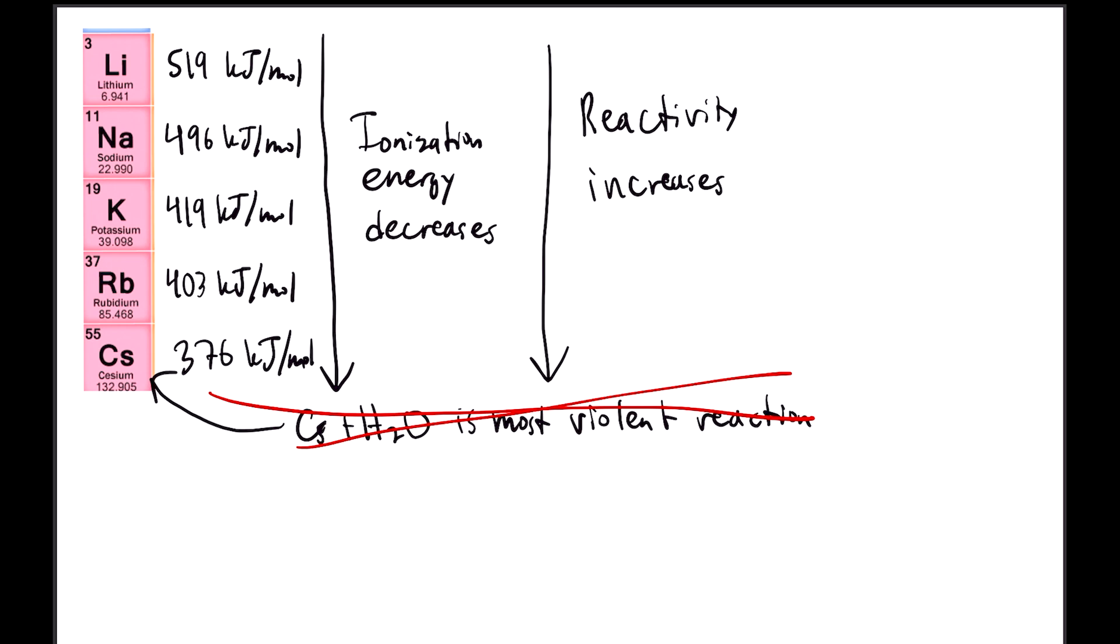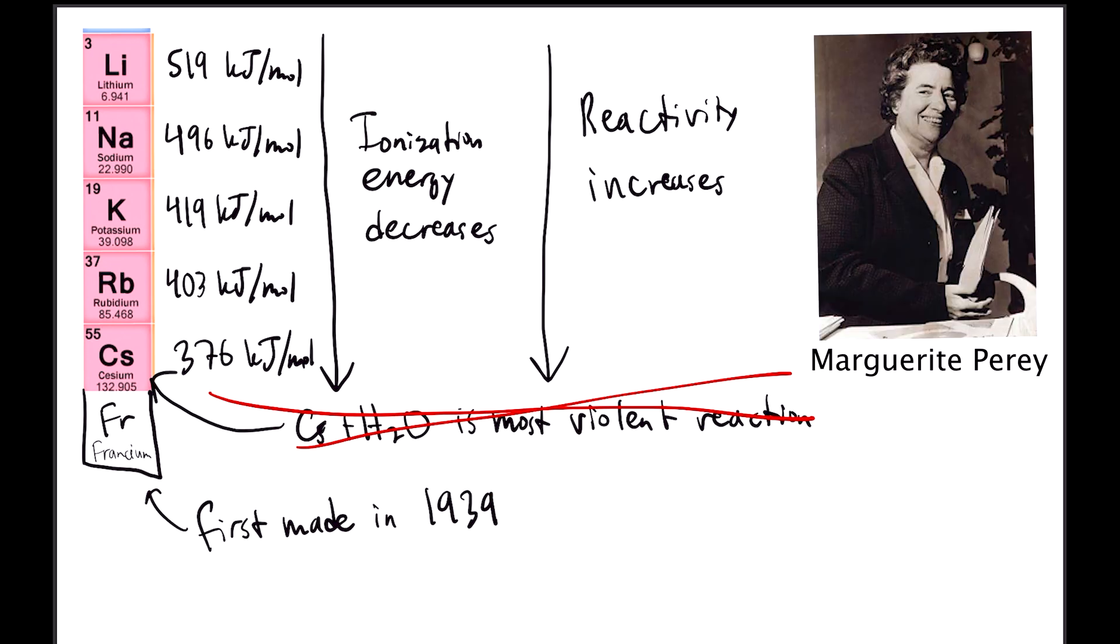The last element is actually francium, an element first synthesized in 1939. It was discovered by a French physicist named Margaret Perret, a student of Marie Curie. Because it's the last element in the group, its valence electron is at the highest energy level, meaning its reaction with water is the most violent.